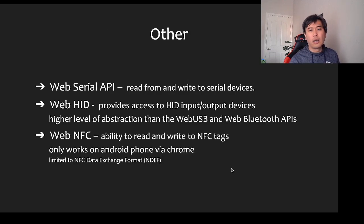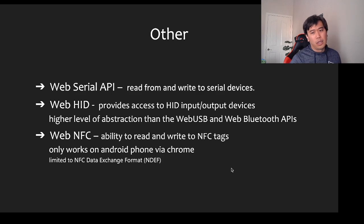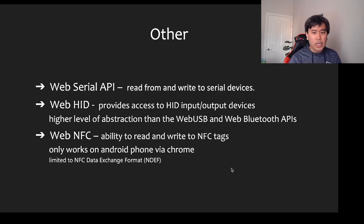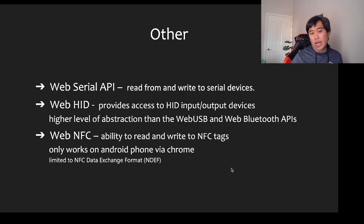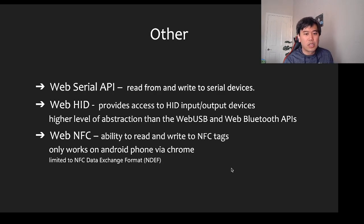Other ways to connect: Web Serial API is specifically for serial devices. Web HID is a higher-level abstraction than Web USB and Web Bluetooth, and only works for HID input and output devices. Web NFC allows reading and writing NFC tags using an Android phone via Chrome, though it's very limited and not encrypted.